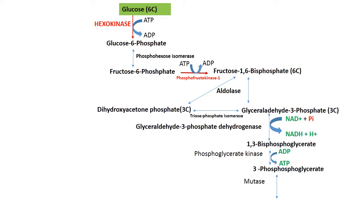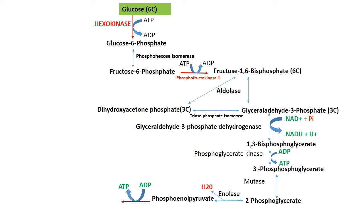3-phosphoglycerate is isomerized by mutase to 2-phosphoglycerate. Then one molecule of water is removed by enolase, converting 2-phosphoglycerate to phosphoenolpyruvate. Phosphoenolpyruvate is then acted upon by pyruvate kinase, forming one molecule of ATP and converting to pyruvate. So here you can see the three reactions and three enzymes marked in red, which are the irreversible or key regulatory enzymes of the glycolytic pathway.